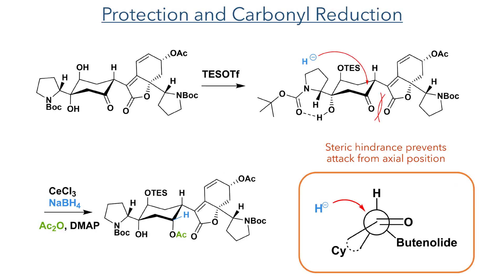Following the conjugate reduction, the synthesis proceeded with the protection of the secondary alcohol using TES triflate. As previously seen, this does not protect the sterically hindered tertiary alcohol. A Luche reduction then followed, which reduced the ketone of the cyclohexanone ring down to an alcohol. Steric hindrance from the butenolide group ensured that the correct isomer was obtained, and the resulting alcohol was acetylated using acetic anhydride and DMAP.